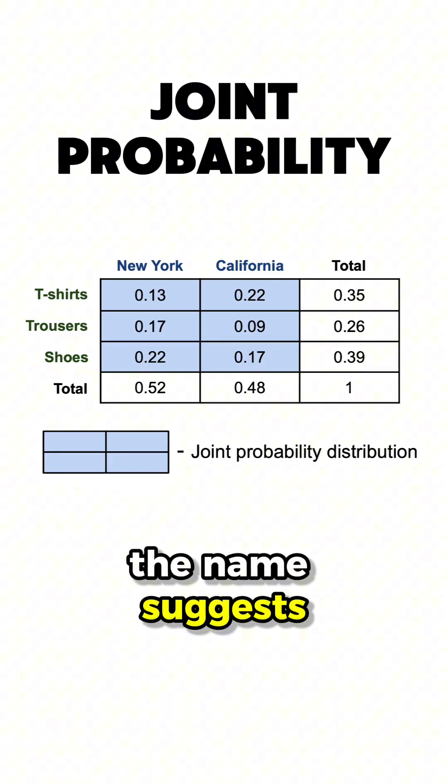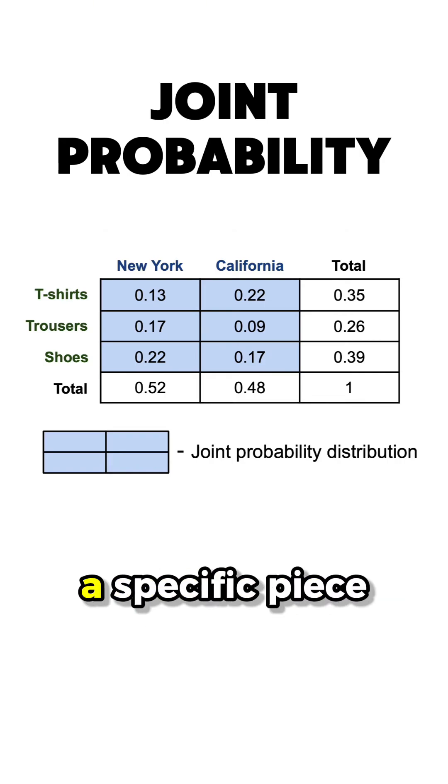Which again, as the name suggests, would indicate how likely it is to sell a specific piece of clothing at a specific location.